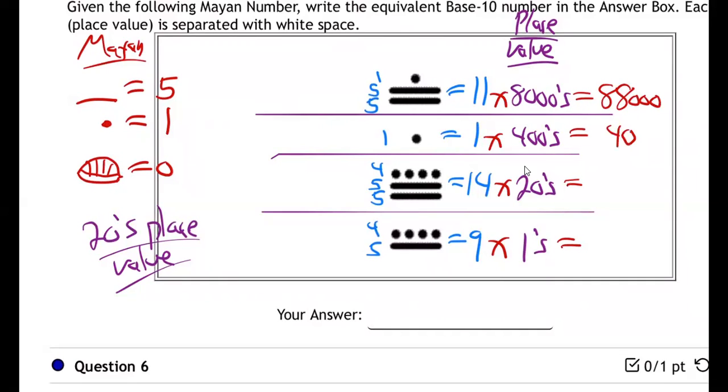And this one is going to be, whoops, 400. This is going to be with a 20 times 14 - 280. And this will be nine. And then we add those up, don't we? So nine, eight, six.